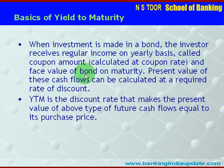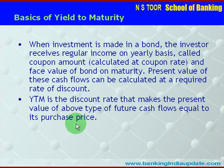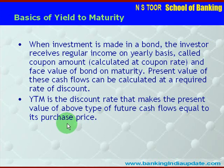Then what is YTM? YTM is that discount rate which makes the present value of the above future cash flows equal to its purchase price. We pay some price when we purchase a bond, and the cash flows are to happen in future. The discount rate at which the purchase price equals the present value of those cash flows is called Yield to Maturity — YTM.